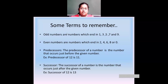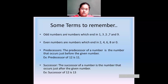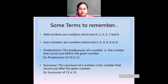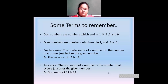Coming to even numbers. Even numbers are numbers which end with two, four, six, eight, or zero. So the numbers which are ending in two, four, six, eight, and zero are called even numbers. For example: 998 is an even number, 200 is an even number, 98 is an even number, 24 and 12 are also examples of even numbers. So when one's place has two, four, six, eight, or zero, they are called even numbers.